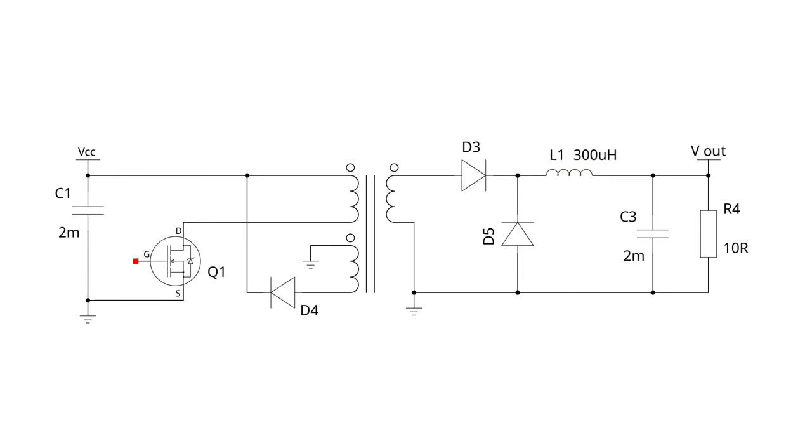Once we turn off Q1 the current stops through the primary. But the inductor L1 wants current to keep flowing through it and so it will pull it through D5 and keep some flowing to the output.